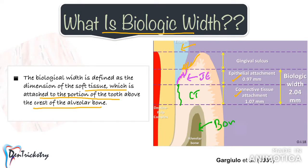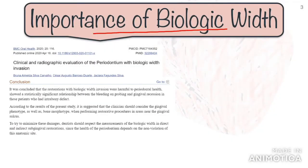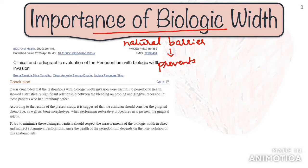On average, the connective tissue attachment height is 1 millimeter and the junctional epithelium is another 1 millimeter, which adds up to 2 millimeters — and this is your biologic width. Remember, this is just an average and it varies from patient to patient. Now, biologic width acts as a natural barrier or shield which prevents the entry of microorganisms in the periodontium.